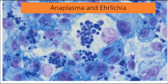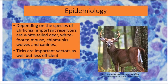This PowerPoint presentation is going to be on Anaplasma and Ehrlichia. The epidemiology of these two bacteria varies by species. Important reservoirs include white-tailed deer, white-footed mouse, chipmunks, wolves, and canines. Ticks live on these animals and are a very important vector for these two organisms.